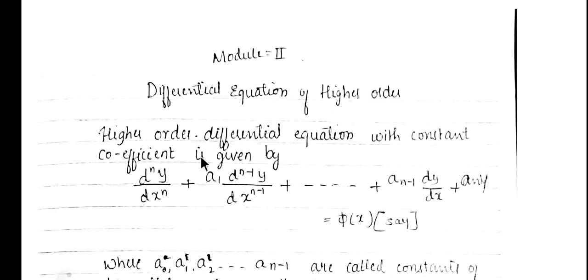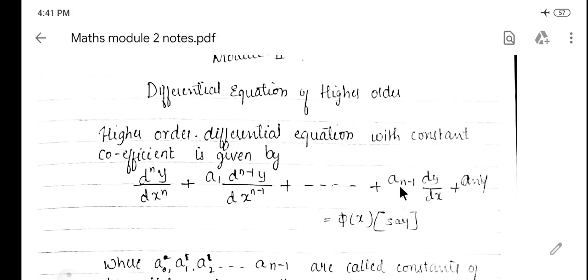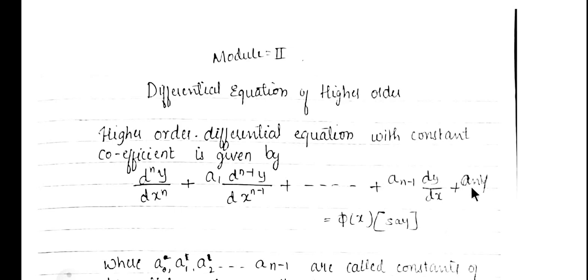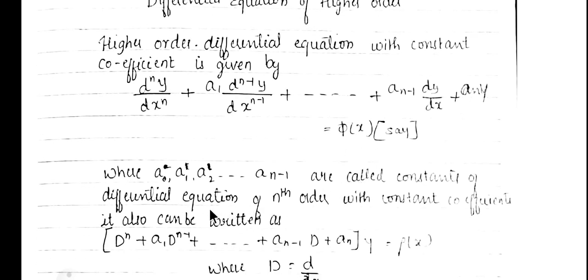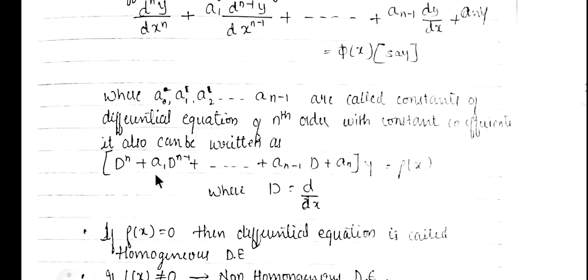A higher order differential equation with constant coefficients is given by the equation: d^n y/dx^n + a1·(d^(n-1)y/dx^(n-1)) + ... + a(n-1)·(dy/dx) + an·y = φ(x). Here a1 through an are all called constants of the differential equation of nth order with constant coefficients. This equation can also be written as (D^n + a1·D^(n-1) + ... + a(n-1)·D + an)·y = φ(x), where capital D denotes d/dx.